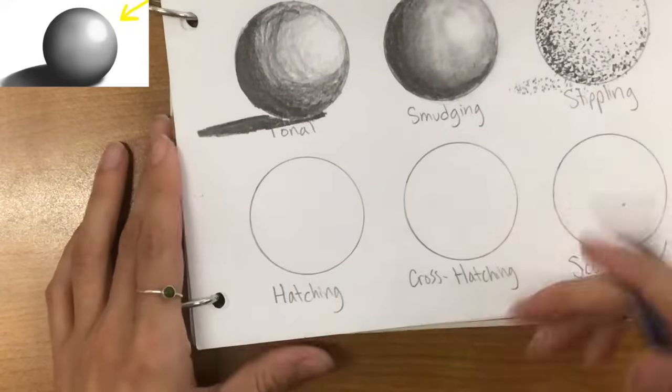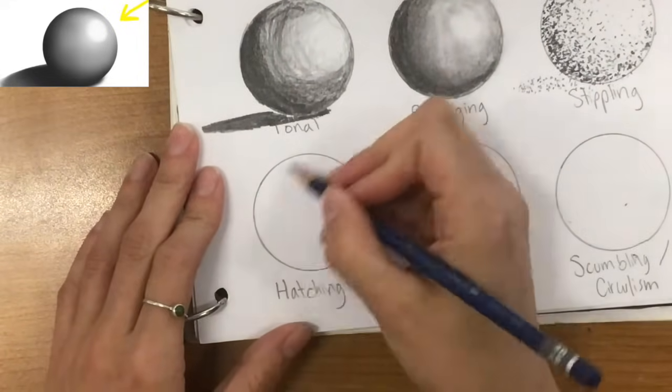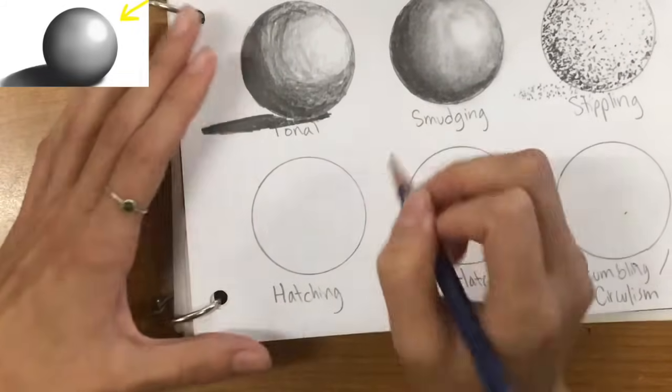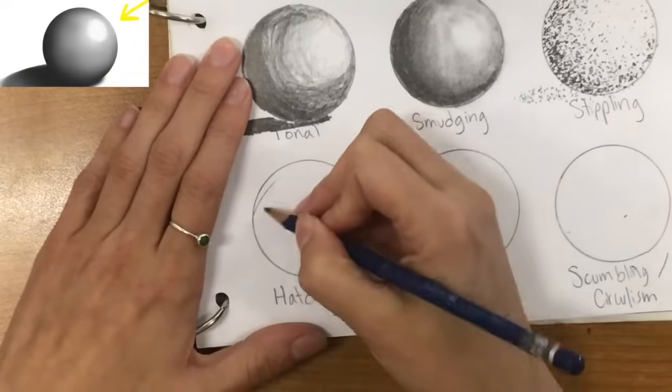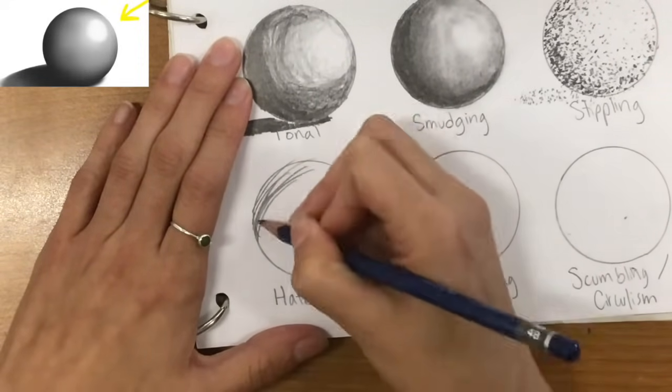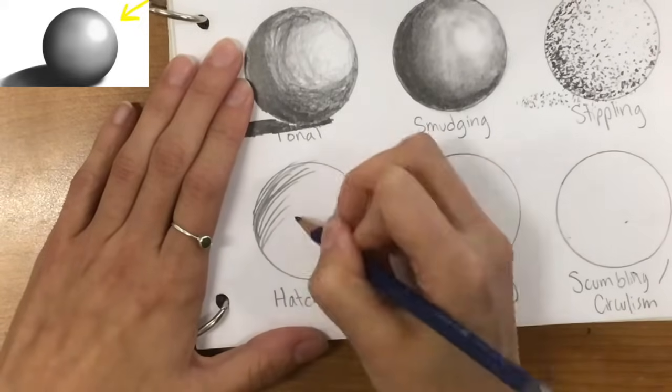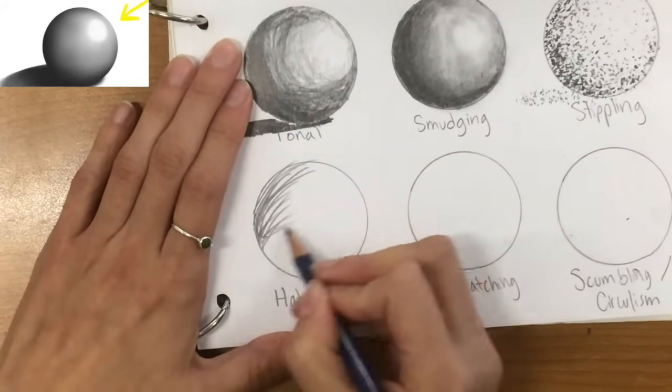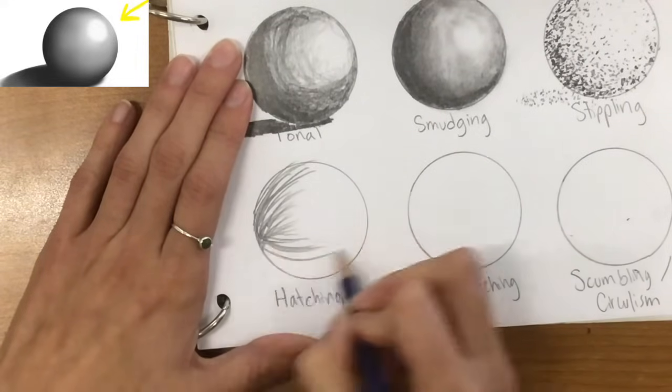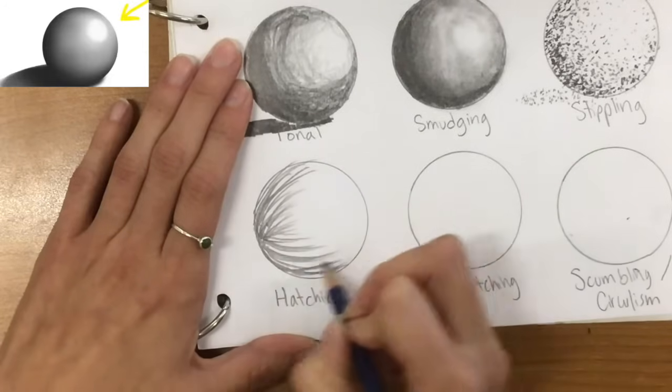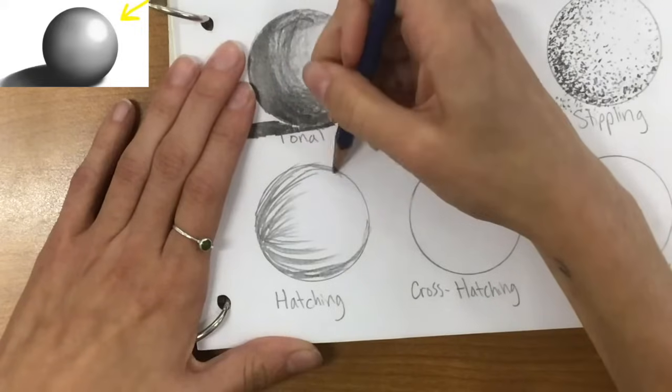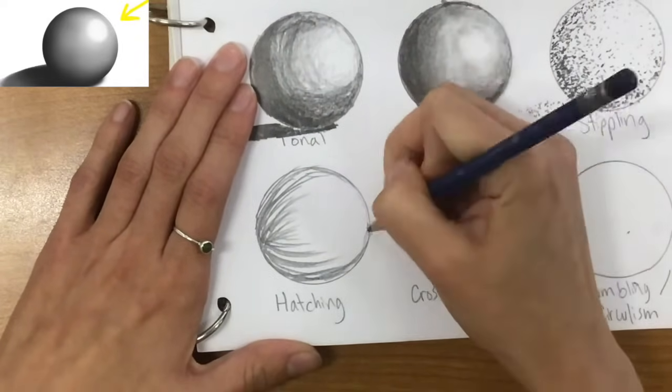All right, so next we have hatching. So this is a series of lines. So hatching, you're only going to make your lines parallel. I'm going to kind of follow the edges of the sphere here. And then as I reach the center here, I'm going to start making them go a little more straight. And then they're going to curve down a little bit to really show the curvature of this sphere. So again, I'm going to bring that shading a little bit over. Just a hint on that other side.